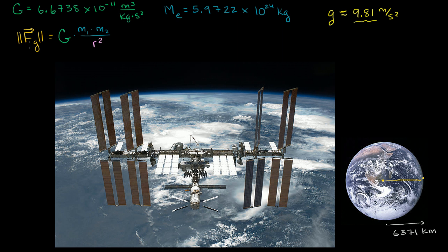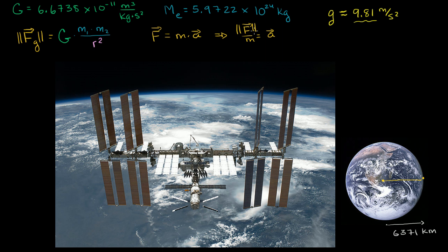This will give us the magnitude of the force. If we want to figure out the magnitude of the acceleration — and I didn't write this as a vector, so this is just the magnitude — if you wanted the acceleration as a vector, you'd have to say downwards, or towards the center of the Earth. To get acceleration, we just remember that force equals mass times acceleration. Dividing both sides by mass gives us: force divided by mass equals acceleration. The magnitude of force divided by mass gives the magnitude of acceleration — this is a scalar quantity.